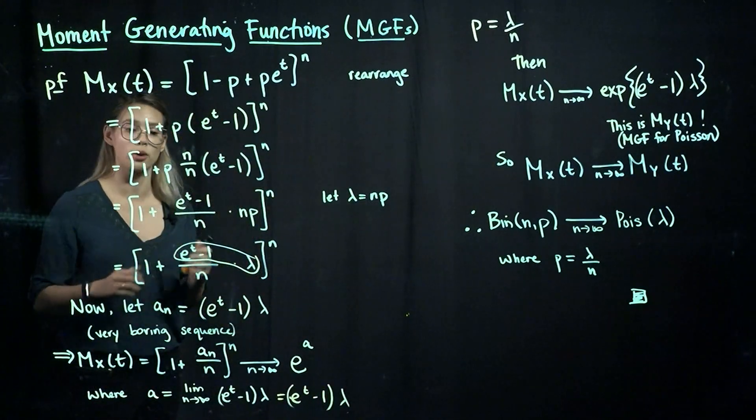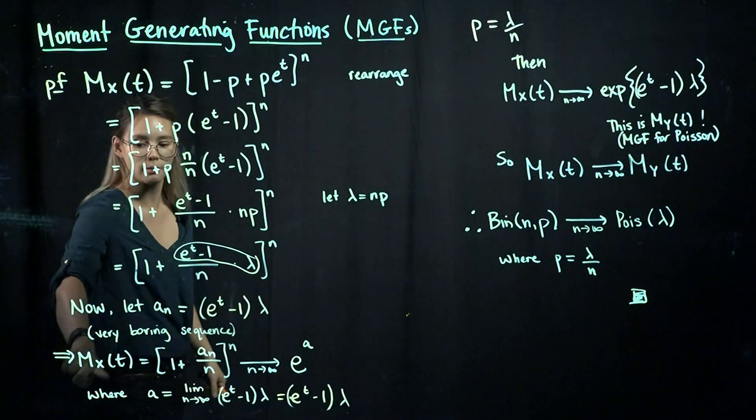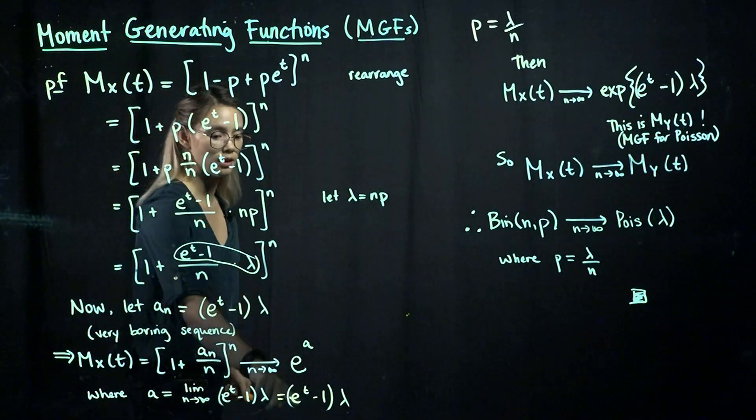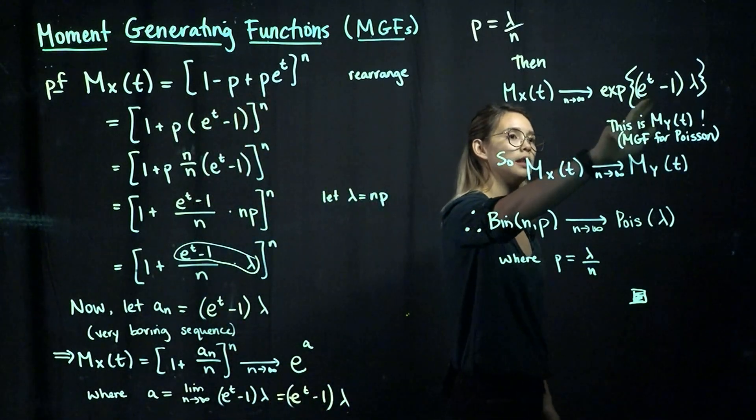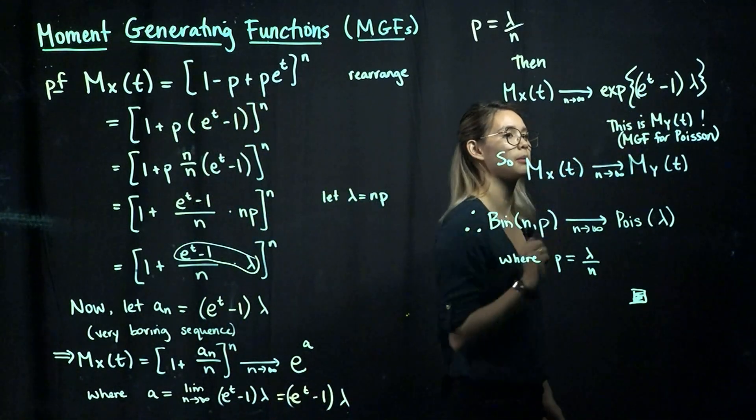All right, so let's go ahead and use that now. So our MGF will converge to e to the e to the t minus 1 times lambda.